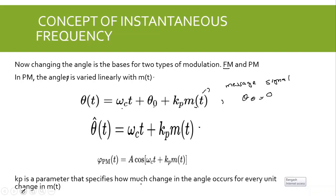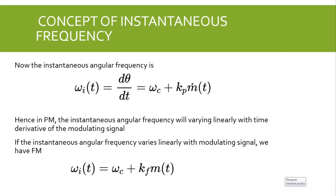In phase modulation, for a change in m of t there is a corresponding variation in the angle of the modulated signal. How much change in the angle occurs for every change in m of t is defined by the parameter kp, which is a constant. To find the instantaneous angular frequency, we take the derivative of the angle equation, which gives omega c plus kp times the derivative of m of t. Hence in PM, the instantaneous angular frequency varies linearly with the time derivative of the modulating signal.